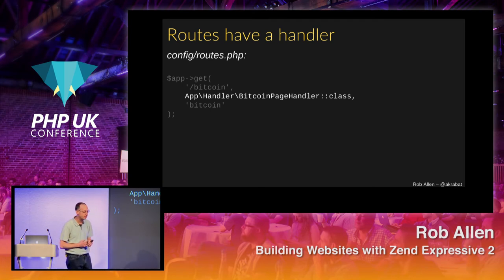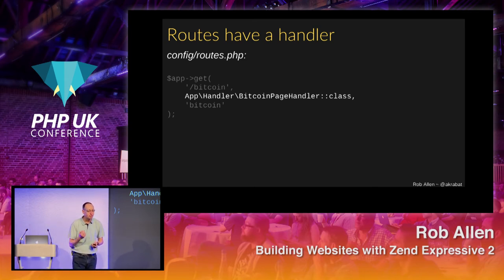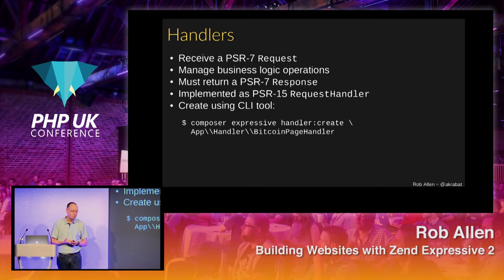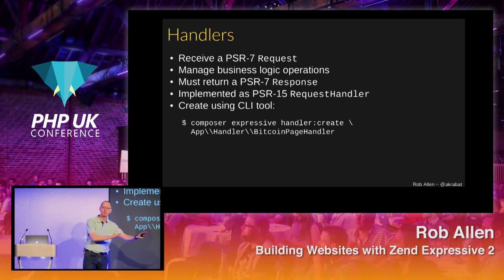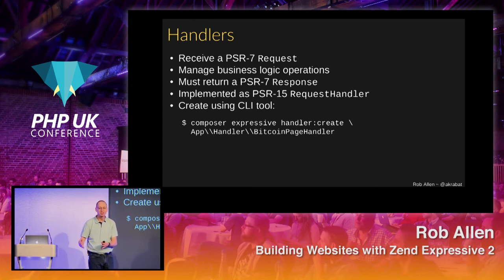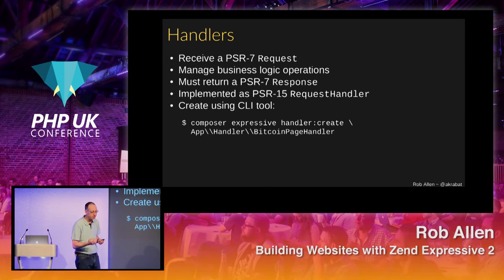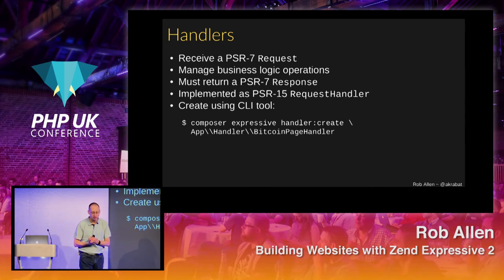Routes have a handler — which, if you remember, is the same as an action — the code that runs only for this particular URL pattern. Handlers receive a PSR-7 request and manage your business logic. Because you are really good developers, most of your code does not live in your controller. Most of our code now lives in the model layer, service classes, or domain layer. We have a very small action which just operates against the PSR-7 response, marshals it, deals with business logic, and must return the PSR-7 response — implemented as a PSR-15 request handler.